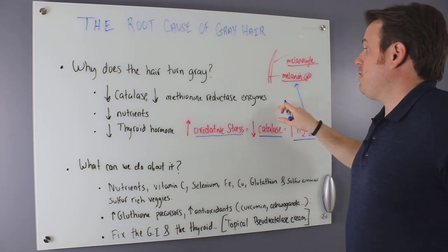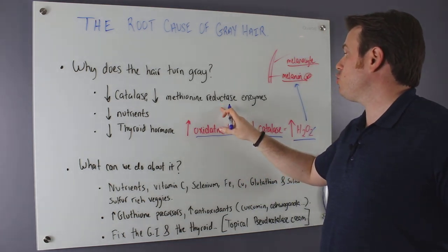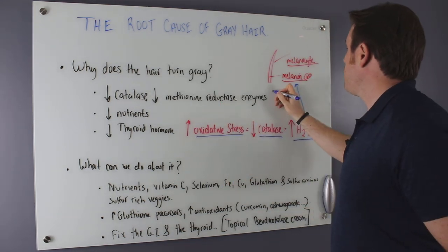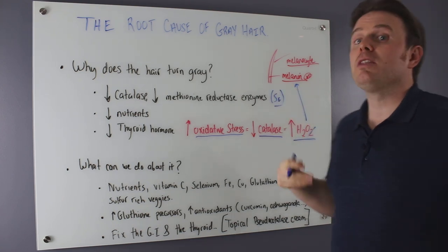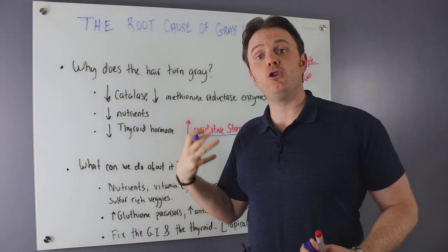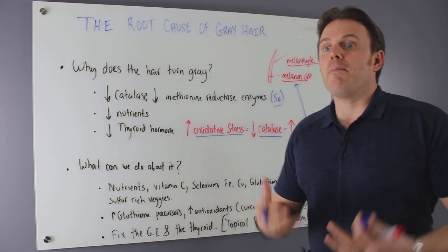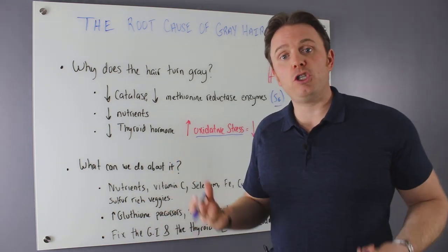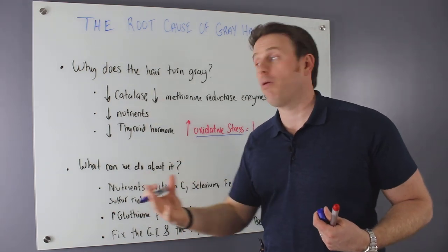Methionine reductase is another interesting enzyme as well. Methionine reductase is strongly influenced by selenium. And we'll talk about that down below. Selenium is also an important precursor to glutathione. So they kind of feed forward on one another. And of course, methionine and sulfur-rich amino acids also influence methionine reductase as well as catalase. Very important.